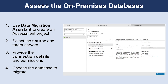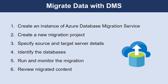The next step is to assess the on-premises databases, ensure that all communication ports are open, and check the connectivity between the source and destination servers before the migration tasks begin. Using the Data Migration Assistant, create an assessment project and give the project a name, select the source and target servers, provide the connection details for the source server including credentials with permission to access it, and on the database selection screen, choose the database you want to migrate.